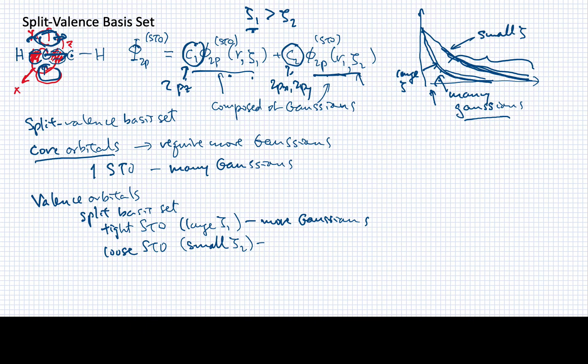When we write down the designations for these kinds of orbital sets, we have a format that looks like N-MPG. G stands for Gaussian. The N tells me how many Gaussians are in these core orbitals. The M tells me how many Gaussians are used for the tight one of the two split valence orbitals. And the P tells me how many are used for the loose. The P is almost always equal to one.